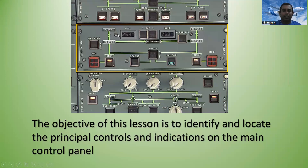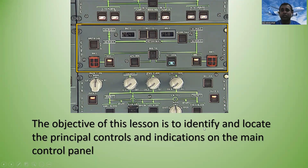You can see this is the electrical panel in the A320/319 Airbus 320 family aircraft. You can see GEN 1, APU chain, external power, GEN 2, IDG1, and IDG2. The objective of this lesson is to identify and locate the principal controls and indications on the main control panel.